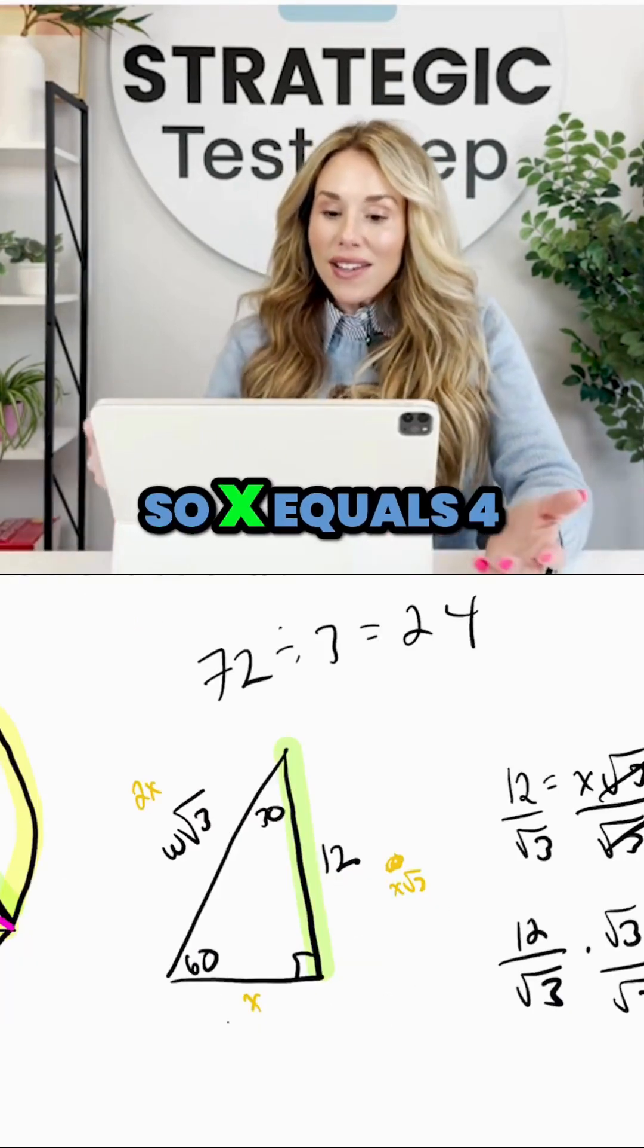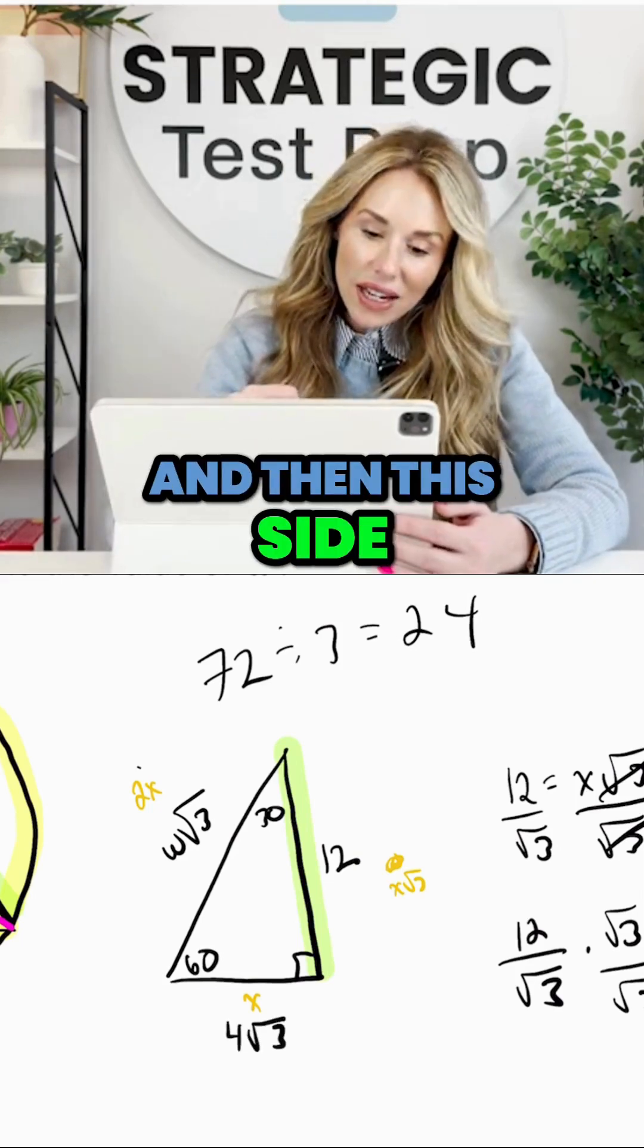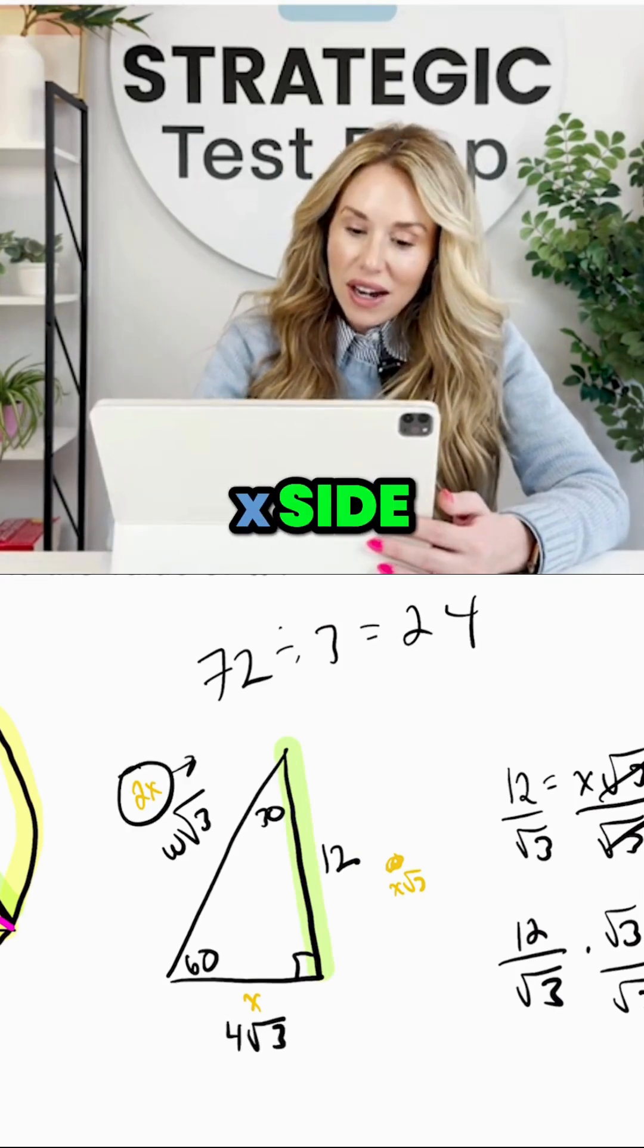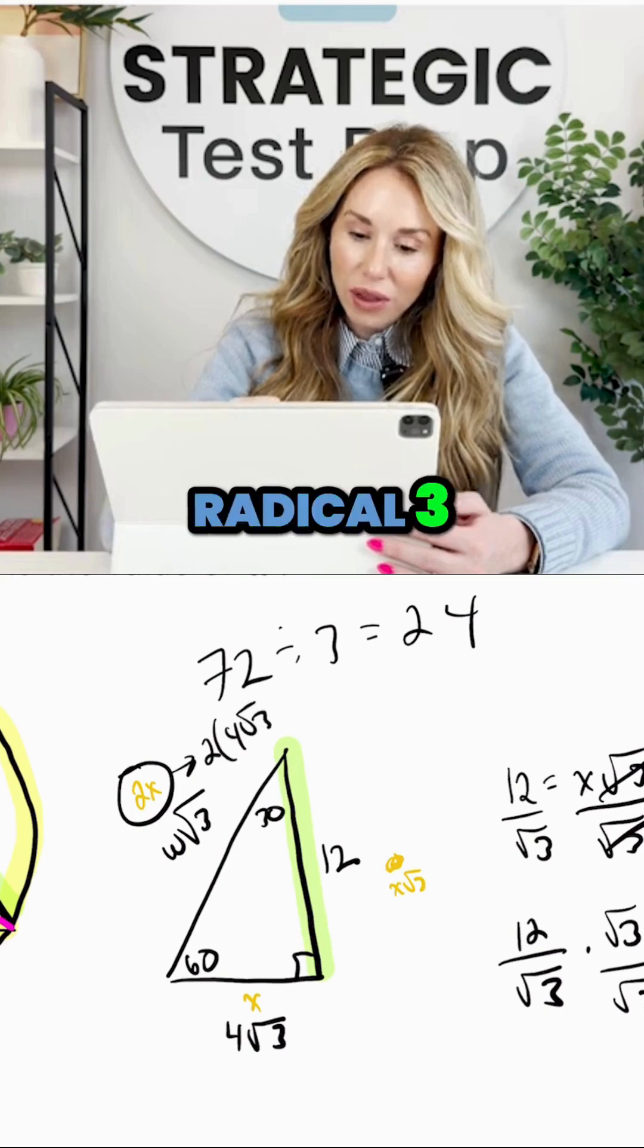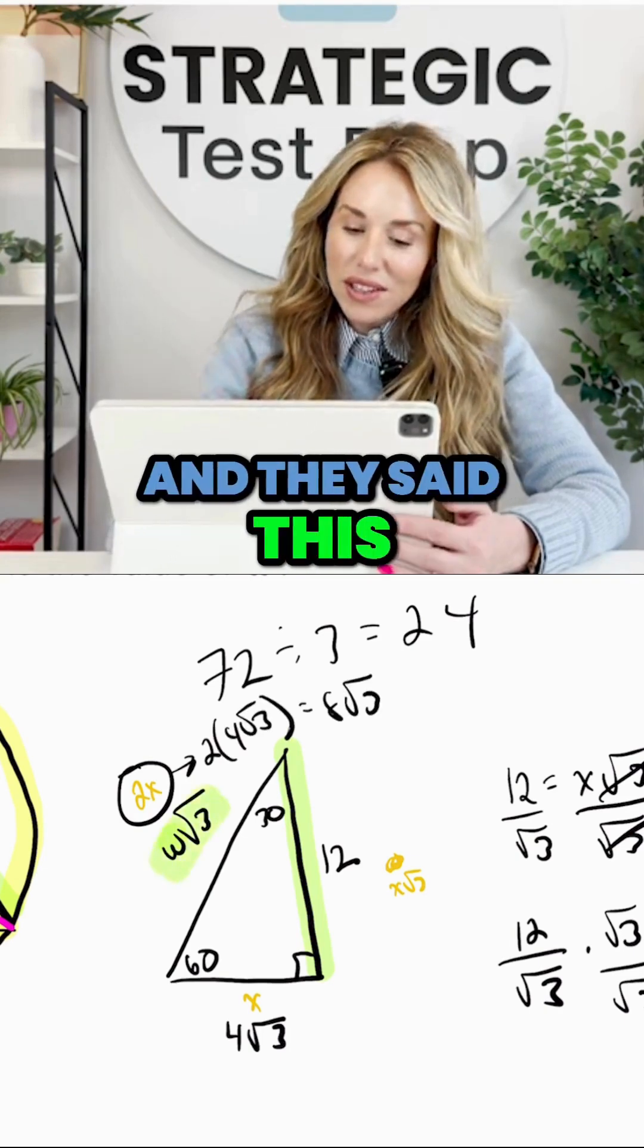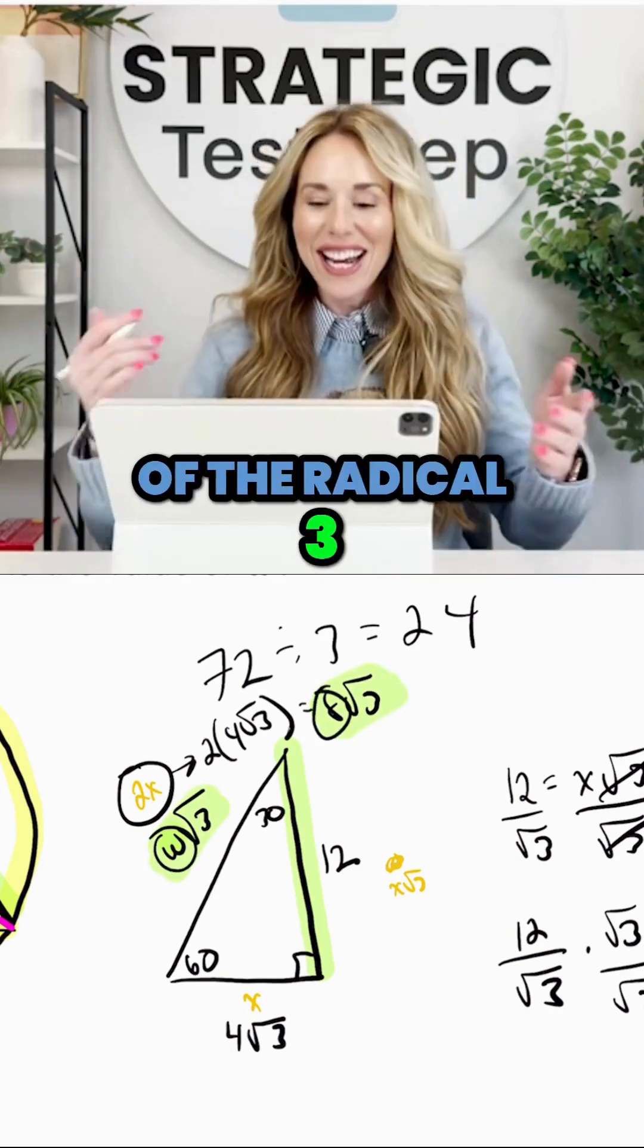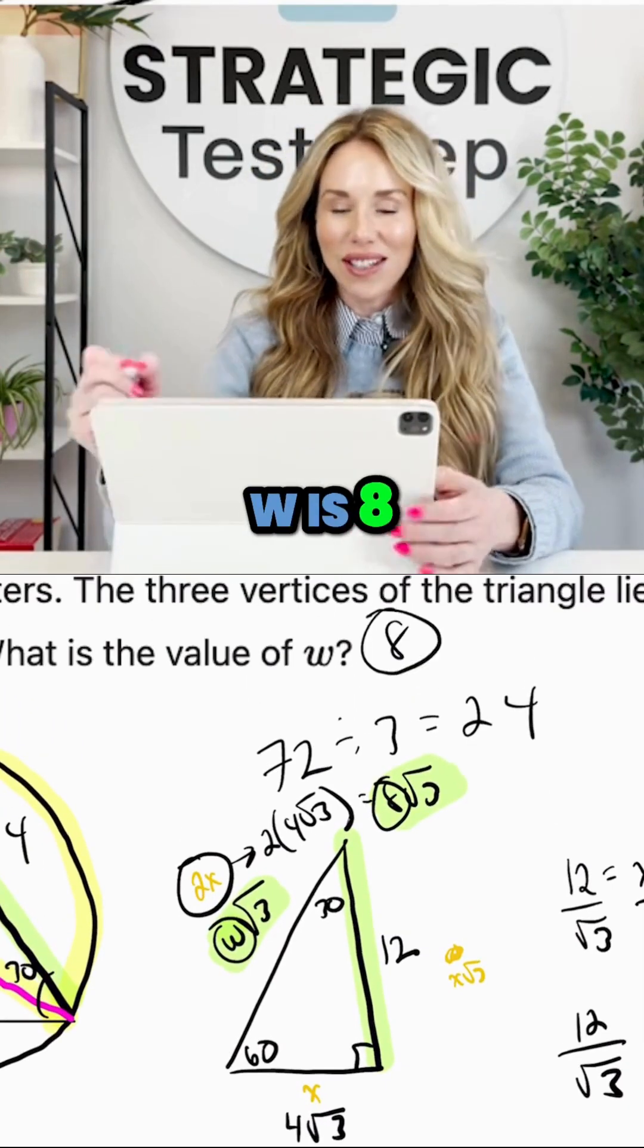So x equals 4√3. So that means that this side is 4√3, and then this side since it's the 2x side, it's 2 times 4√3, which is 8√3. So when they want to know what w is and they said this side is w√3, well w has to be 8 because it's outside of the radical 3. And then you're done, so the value of w is 8.